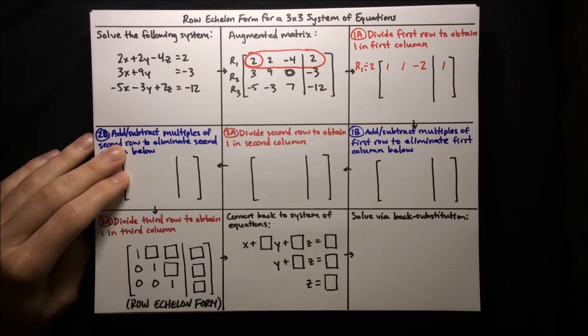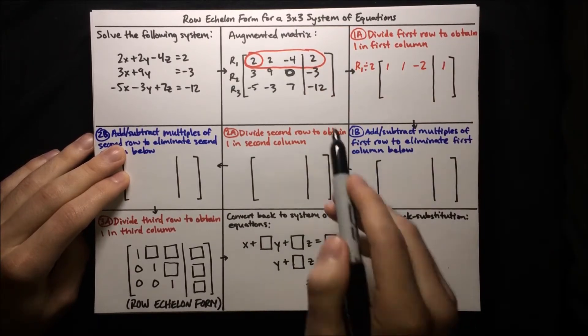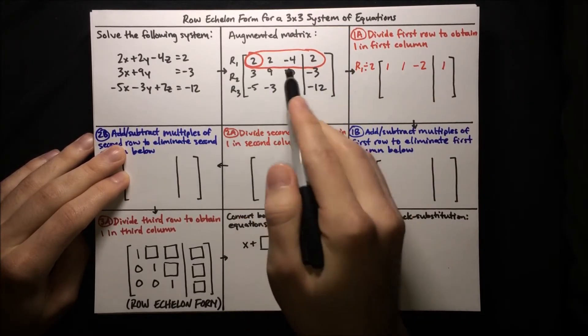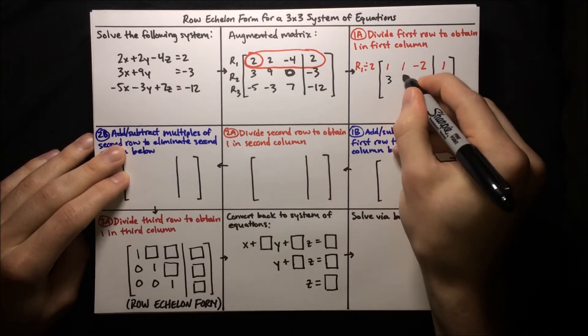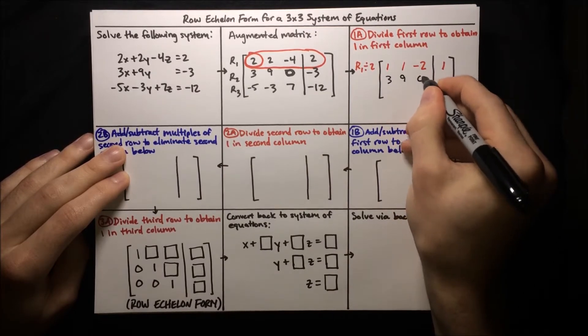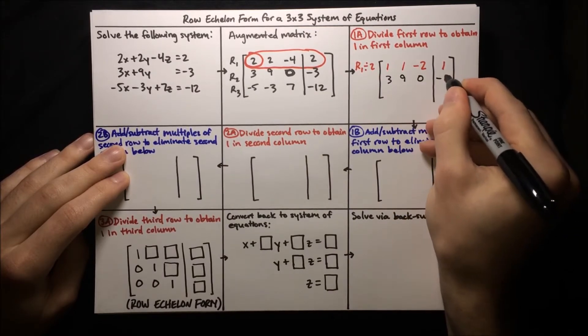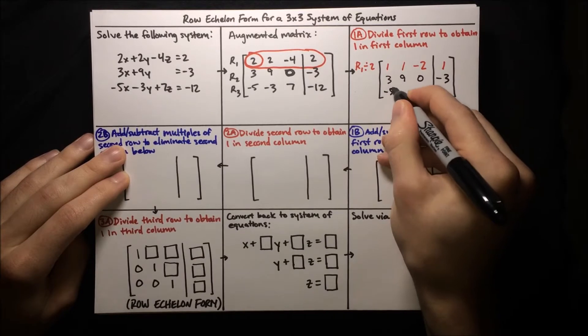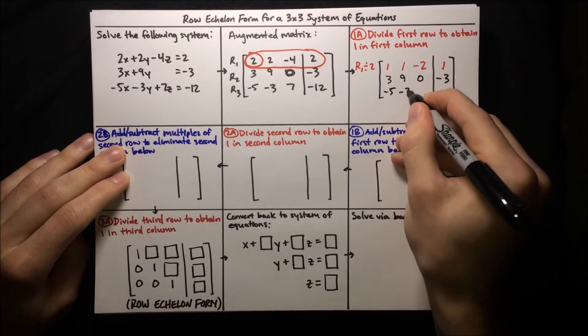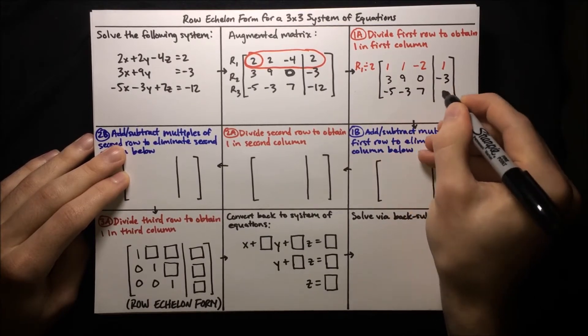Now we'll write down the rest of our matrix. We had 3, 9, 0, negative 3, then negative 5, negative 3, 7, negative 12.